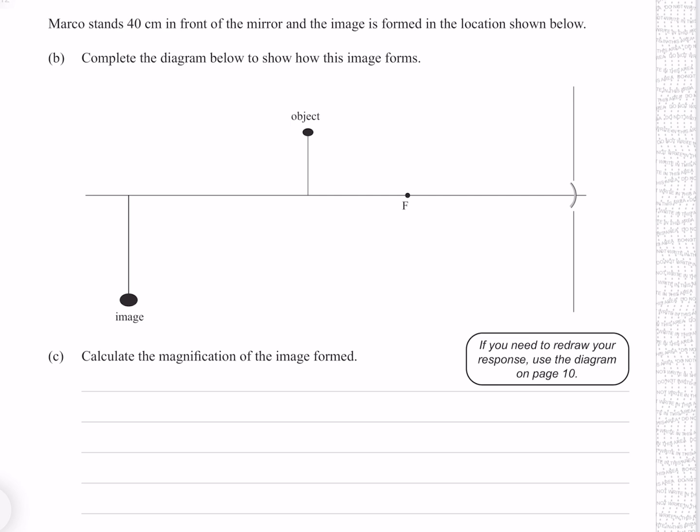Marco stands 40cm in front of the mirror and the image is formed in the location shown below. Complete the diagram below to show how this image forms. Doing my best without a ruler, the first ray reflects symmetrically about the center of the mirror. The second ray travels parallel to the axis and then reflects through the focal. And the third ray passes through the focal and then reflects parallel to the axis.